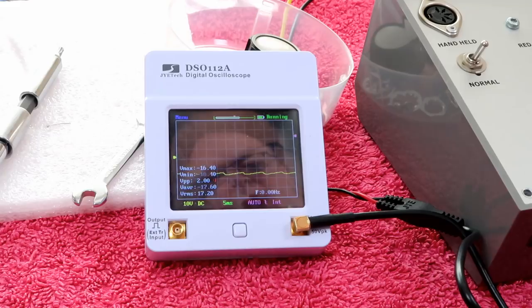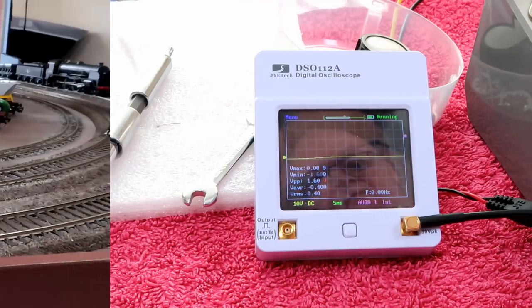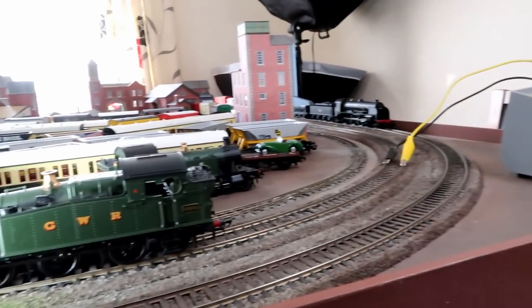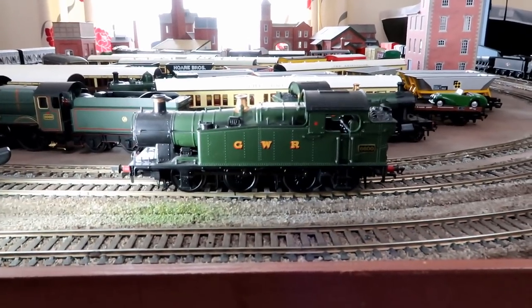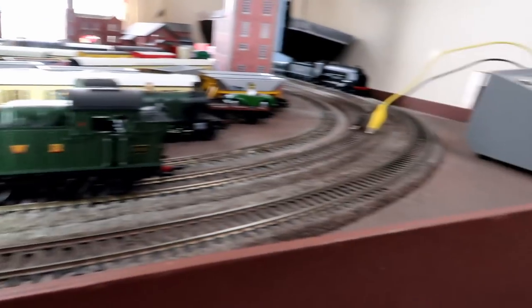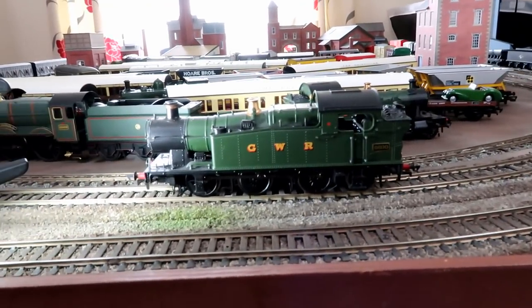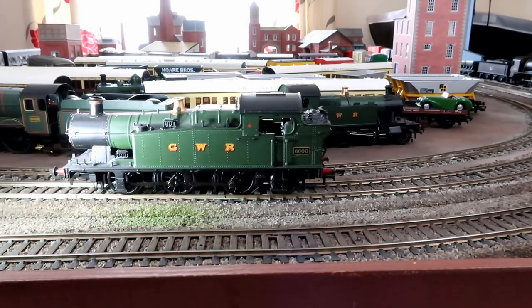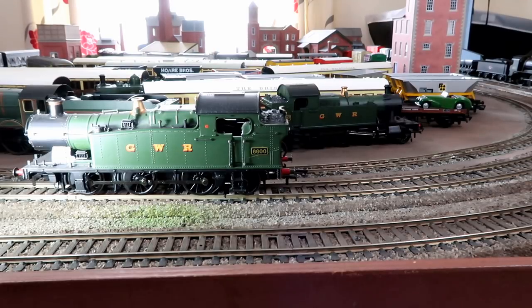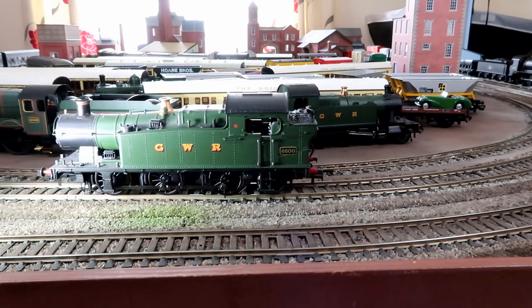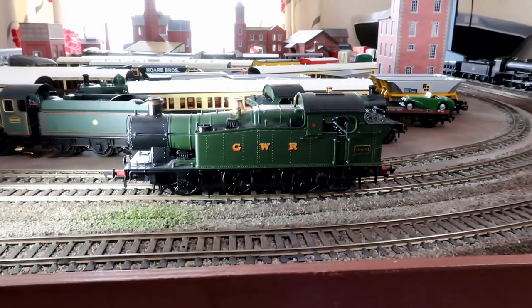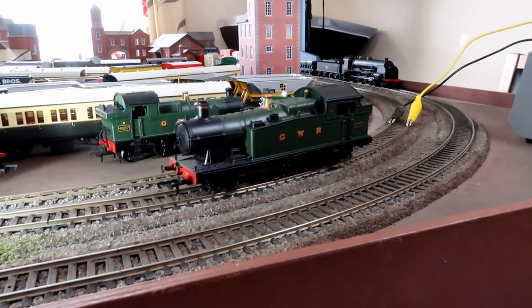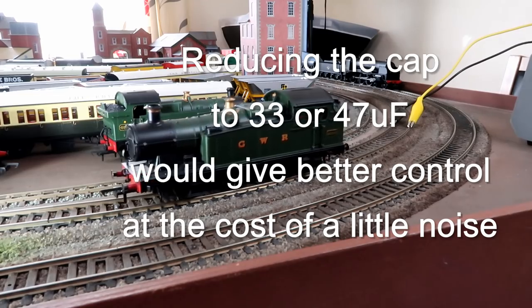Right, so we have the Morley back connected to the track just here, and we have the Batman 5600 which was one of the test locos there, and this is the control knob. If you remember, we couldn't crawl. Well, looks like we can now. It's also completely silent.